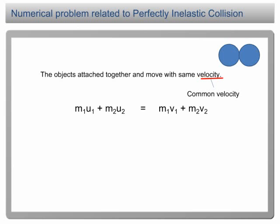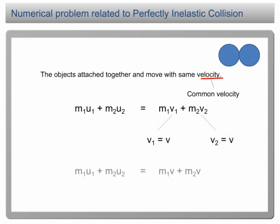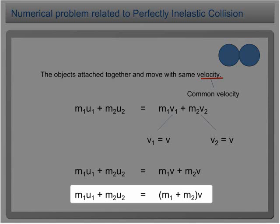However, we need to make some changes to the equation. In a perfectly inelastic collision, the objects move at the same speed after the collision. Therefore, we write v1 equals v, and v2 is also equal to v, where v is the common velocity. The equation becomes m1u1 plus m2u2 equals m1v plus m2v. Factorizing by taking out v, we get m1u1 plus m2u2 equals bracket m1 plus m2 close bracket times v. This is the equation for perfectly inelastic collision.